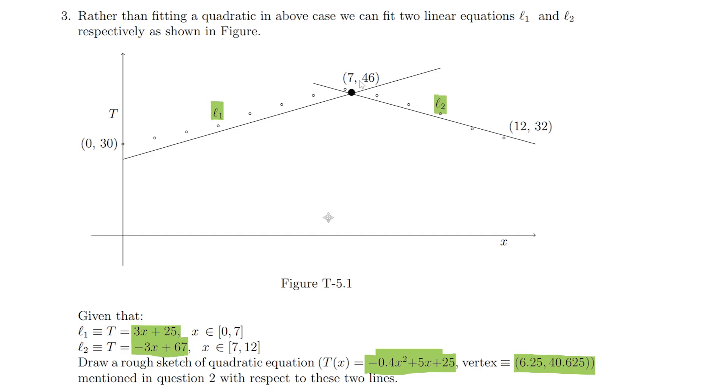0 comma 30, 7 comma 46, and 12 comma 32 are already given. The remaining ones: this is 1 comma 32, this is 2 comma 34, this one is 3 comma 36.